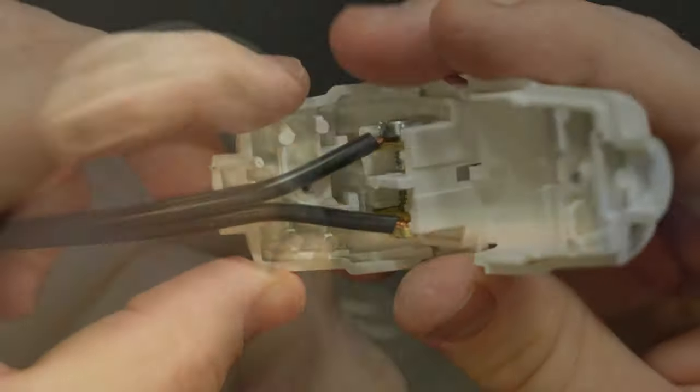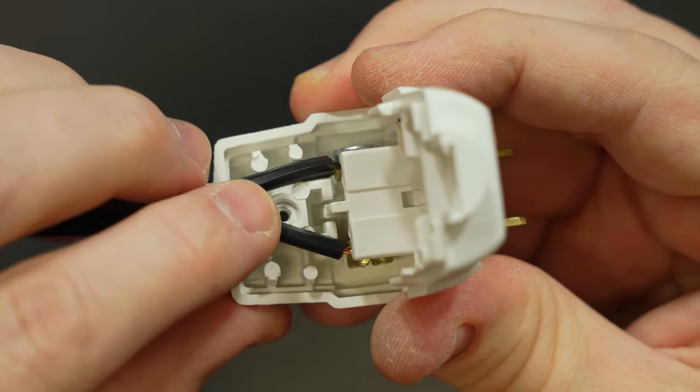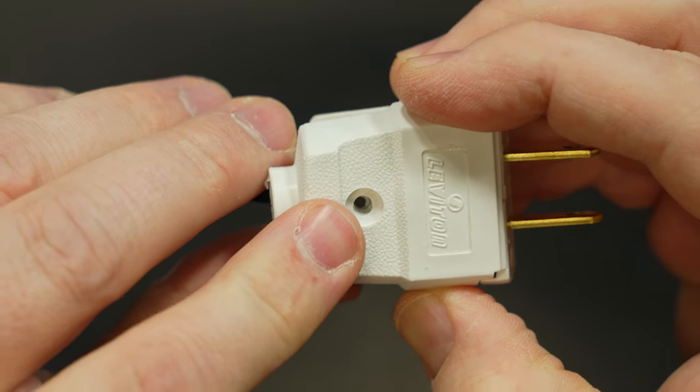Repeat this process for the other side and then with the wiring finished you're now ready to close up the plug body. Now notice that there's a small hole in the middle of the body and this is for the screw that holds the two halves together.